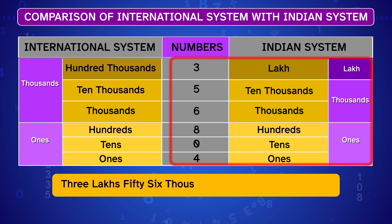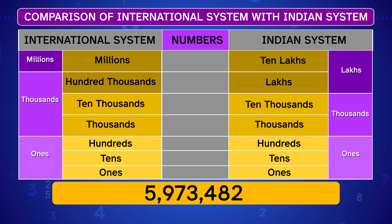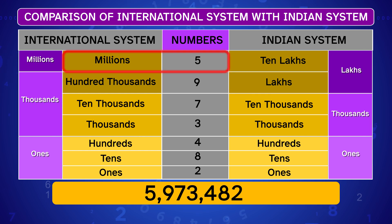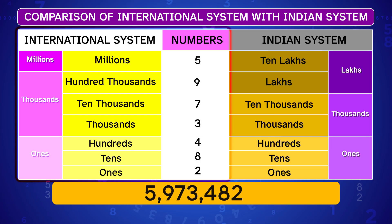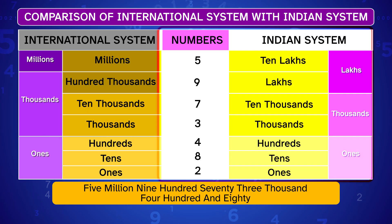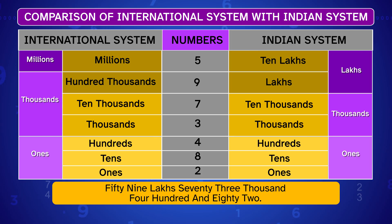In the International System, 356,804 is read as three hundred fifty-six thousand, eight hundred and four. In the Indian System, it is three lakhs fifty-six thousand eight hundred and four. Another example: 5,973,482. In the International System it is five million, nine hundred seventy-three thousand, four hundred and eighty-two. In the Indian System it is fifty-nine lakhs, seventy-three thousand, four hundred and eighty-two. Each place gives the digit a different value — that's how we read and understand big numbers.